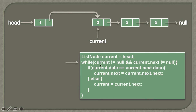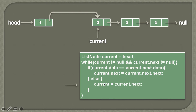Once again the while loop condition is evaluated. Current is not null and current.next is also not null, so the while loop executes. We check whether current data equals current.next data — current data is 2 and current.next data is 3, so they are not equal. The else condition executes and we assign current.next to current, traversing to the next node.